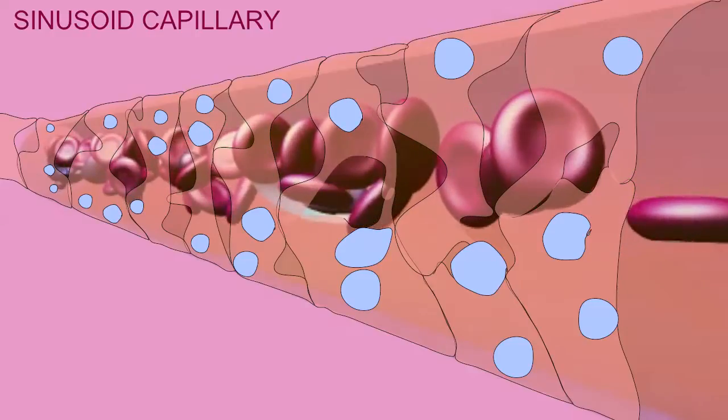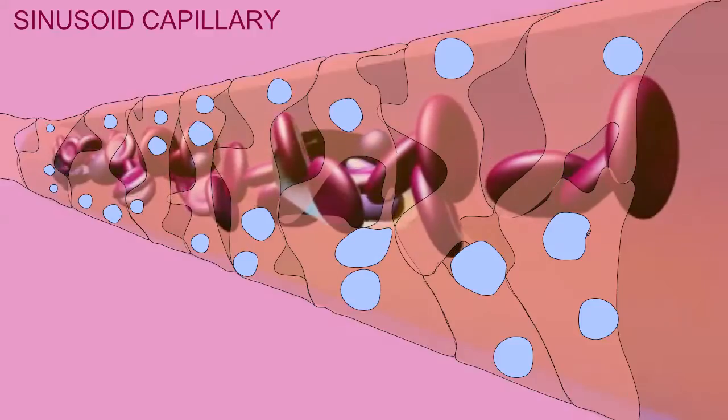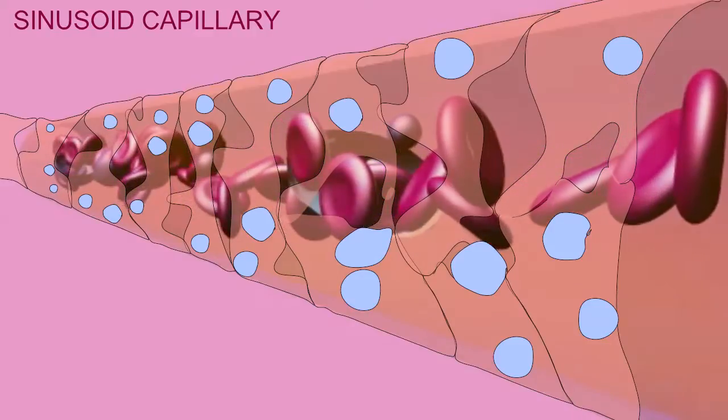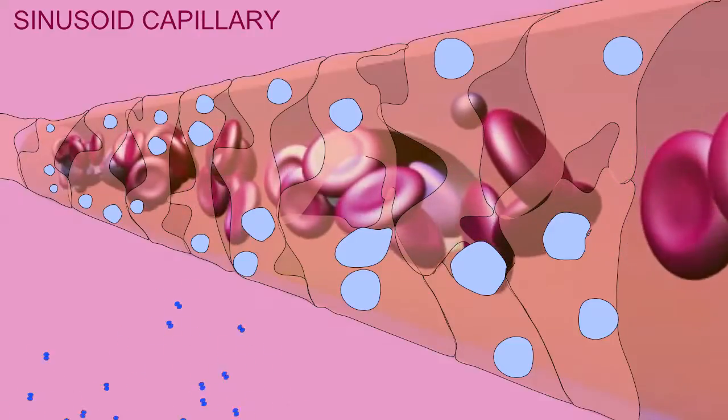In sinusoid capillaries, the endothelial cells have fewer tight junctions uniting their cell membranes. The intercellular clefts are larger and the fenestrations are larger.